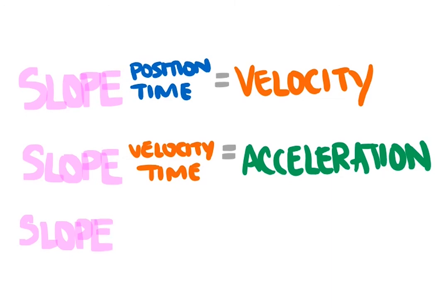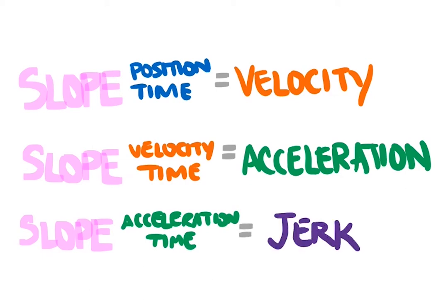Does the slope of the acceleration-time graph mean anything? It actually shows us how quickly acceleration is changing — we call this jerk: the change in acceleration divided by time. But we won't be going into further details about jerk here, since we're focusing on constant acceleration situations.